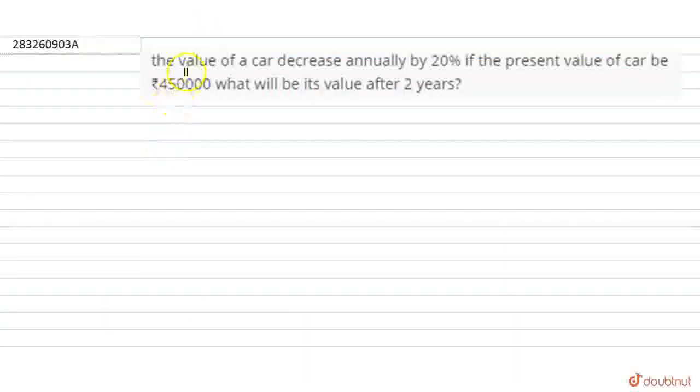Hello everyone, now let's start the question. The question says, the value of a car decreases annually by 20%. If the present value of the car is 450,000, what will be its value after 2 years?